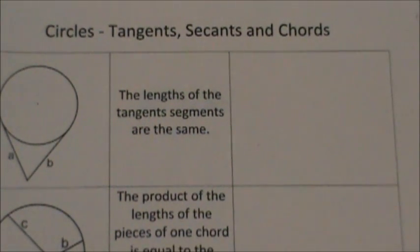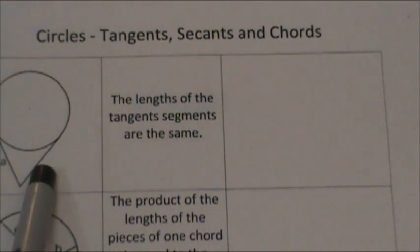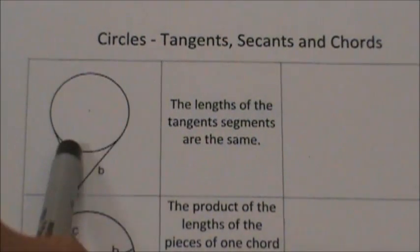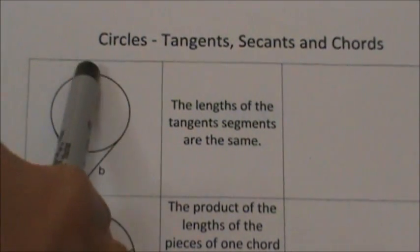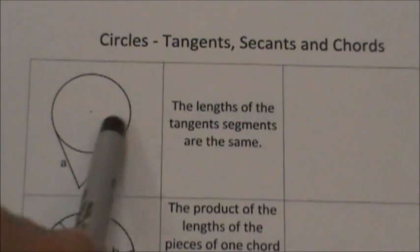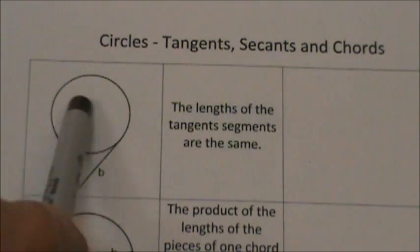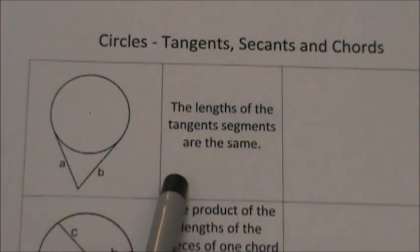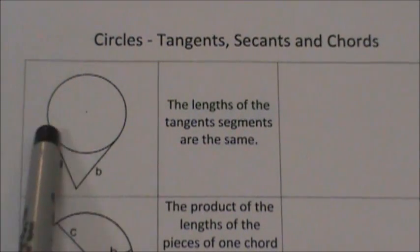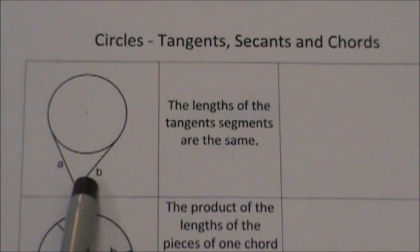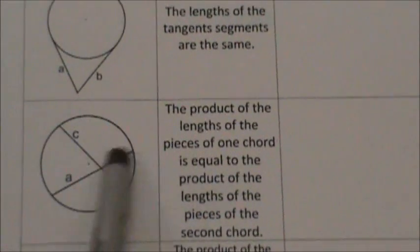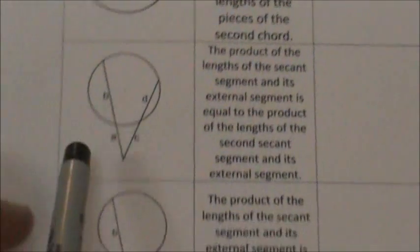The first topic we're going to go through are segments. In the last unit we concentrated on central angles, inscribed angles, angles inside the circle, and angles on the outside. This unit we're going to look at segments and the lengths associated with tangents, chords, and secants.